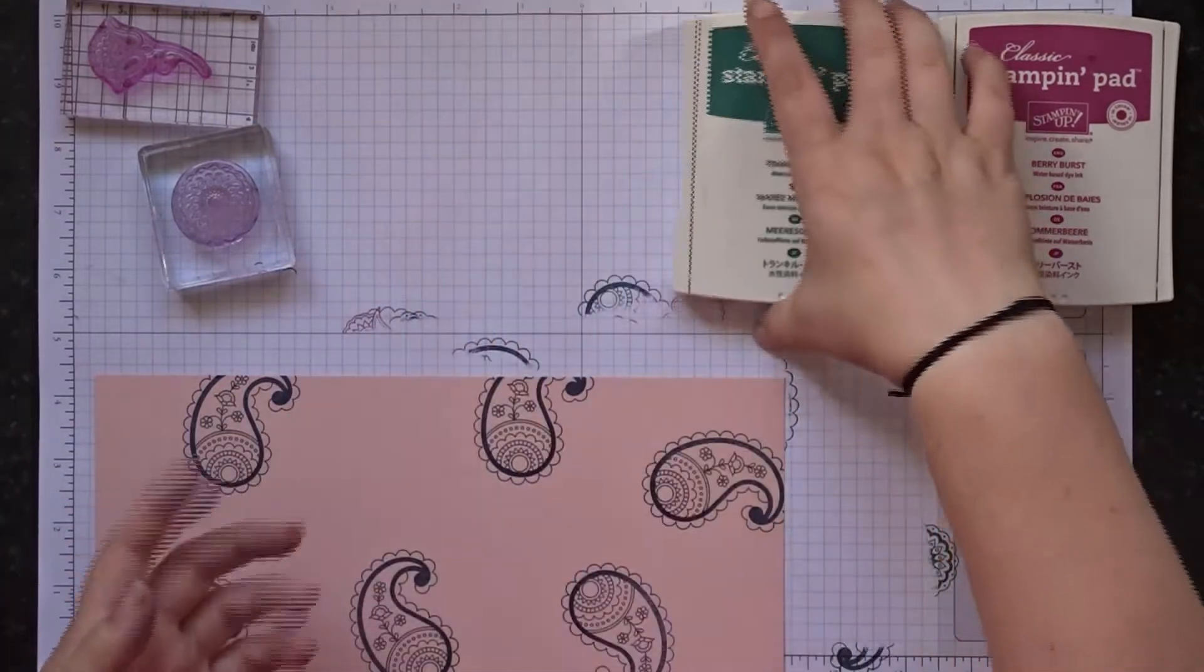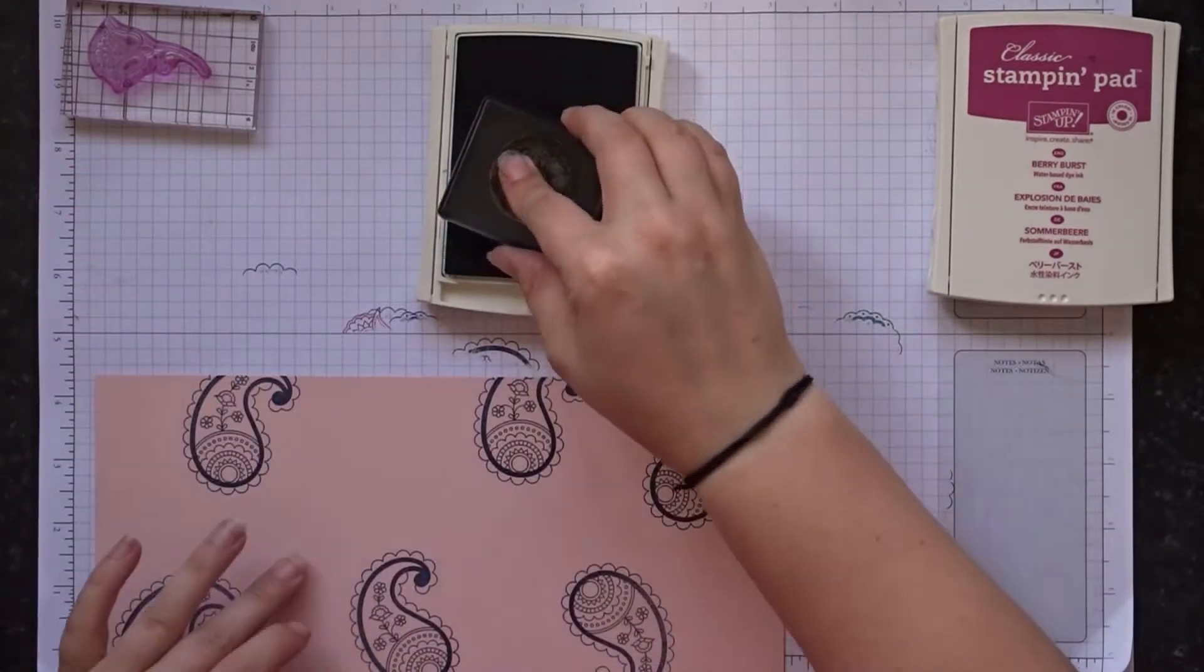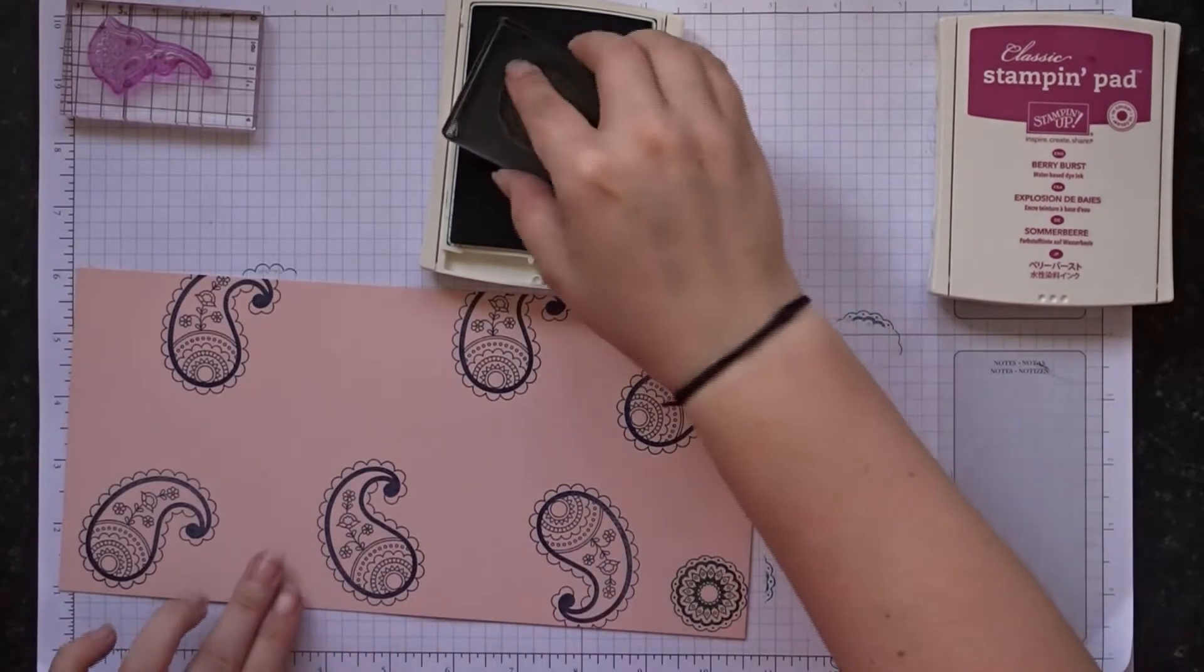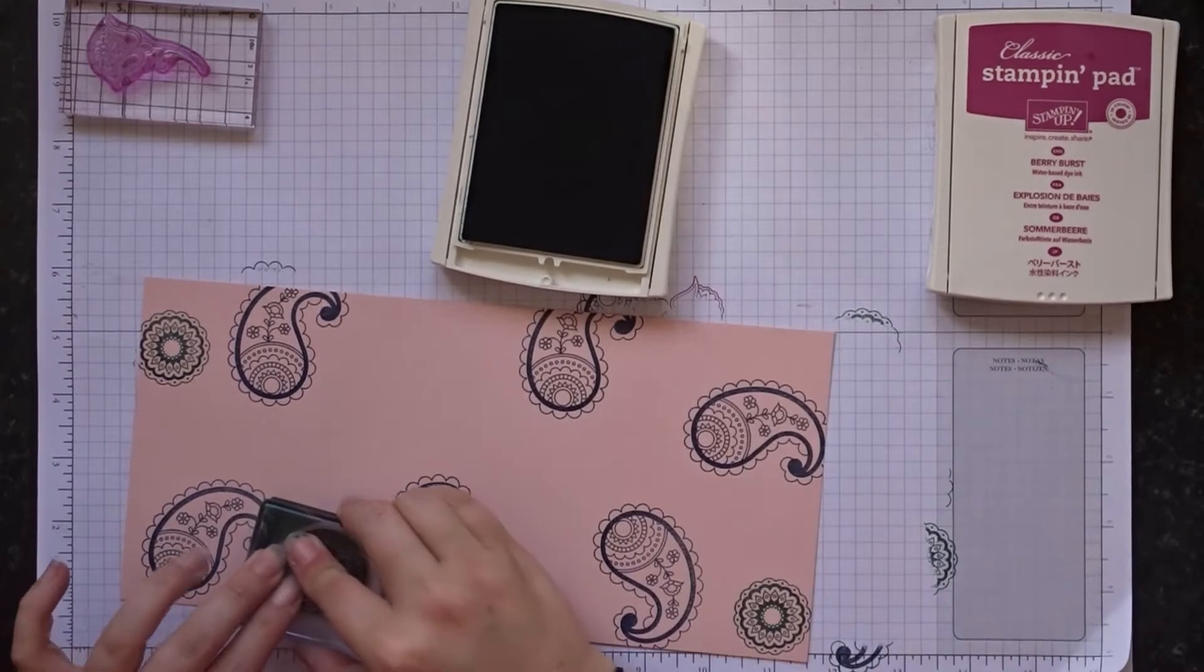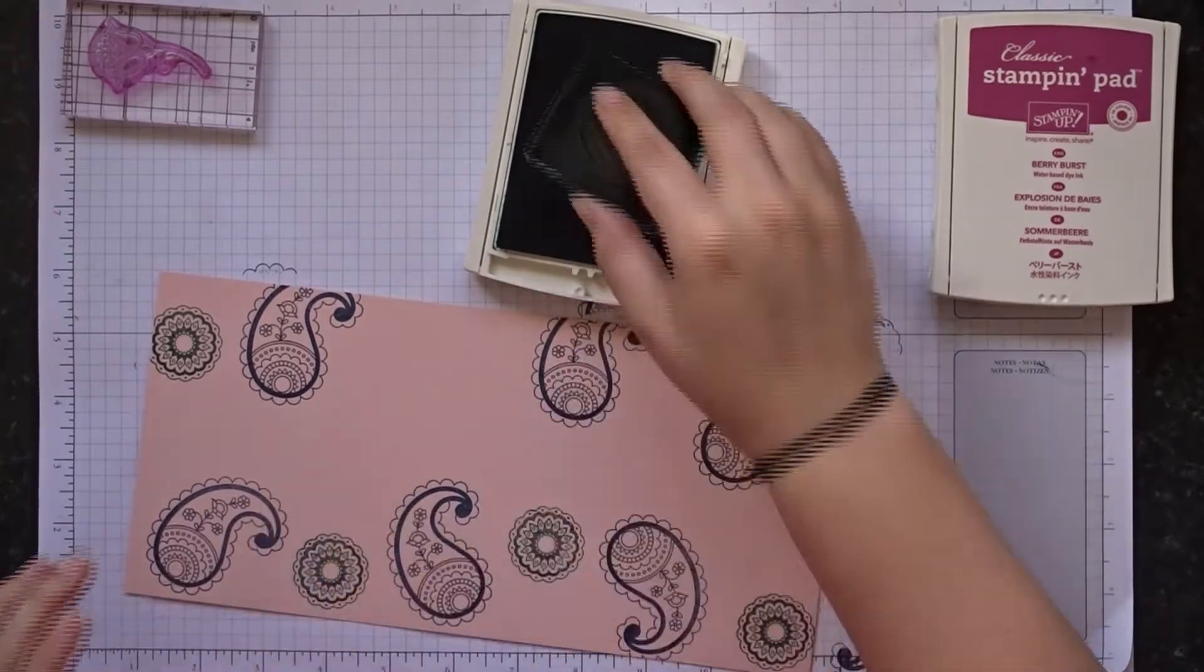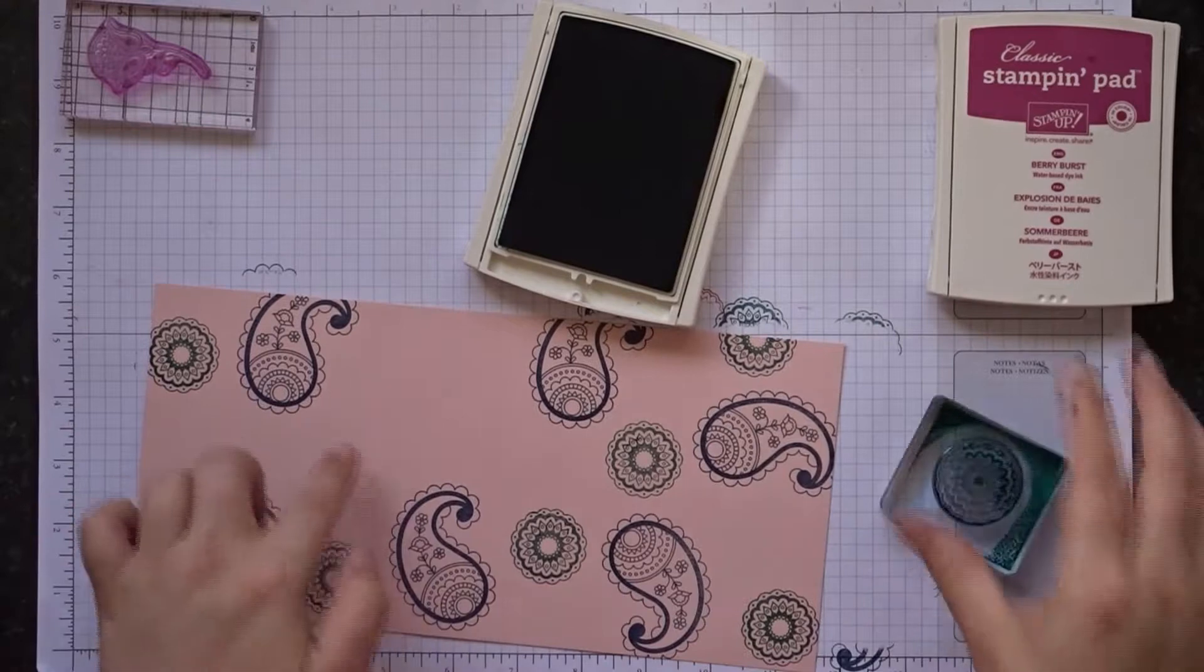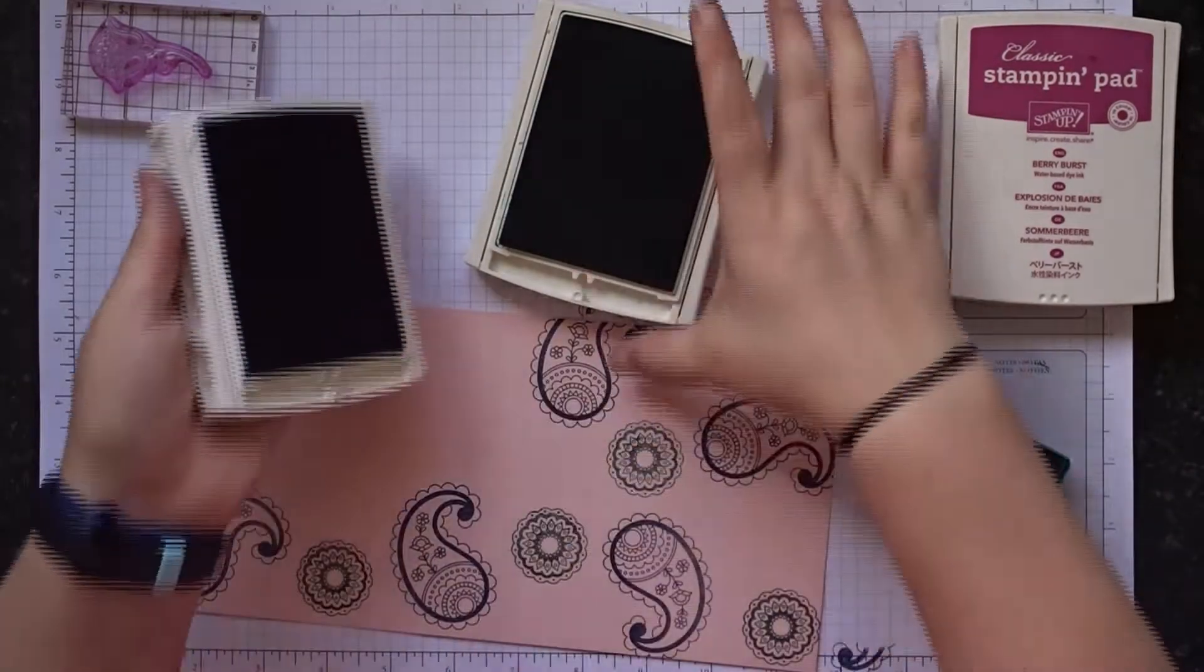Then I'm going to do Tranquil Tide next which I'm going to use this beautiful circle stamp. It's like a floral one. And then I'm just going to put these in and dot these around the larger paisley print we've just done. I think I need another larger one there as I seem to have a bit of a gap.